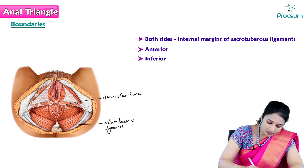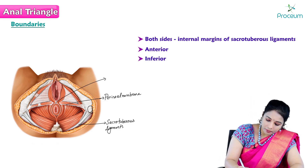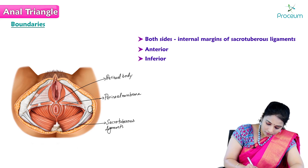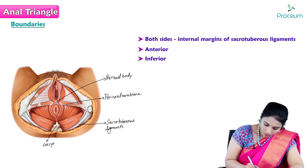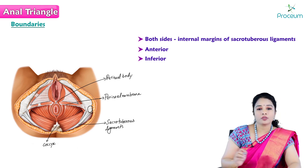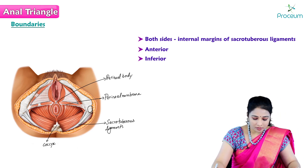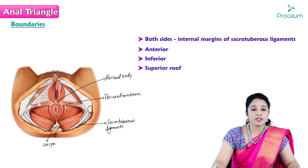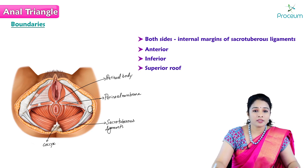Anteriorly in the midline, the boundary is the perineal body, and inferiorly by the coccyx. So these are the boundaries of the anal triangle. The superior roof of the anal triangle is the levator ani muscle.